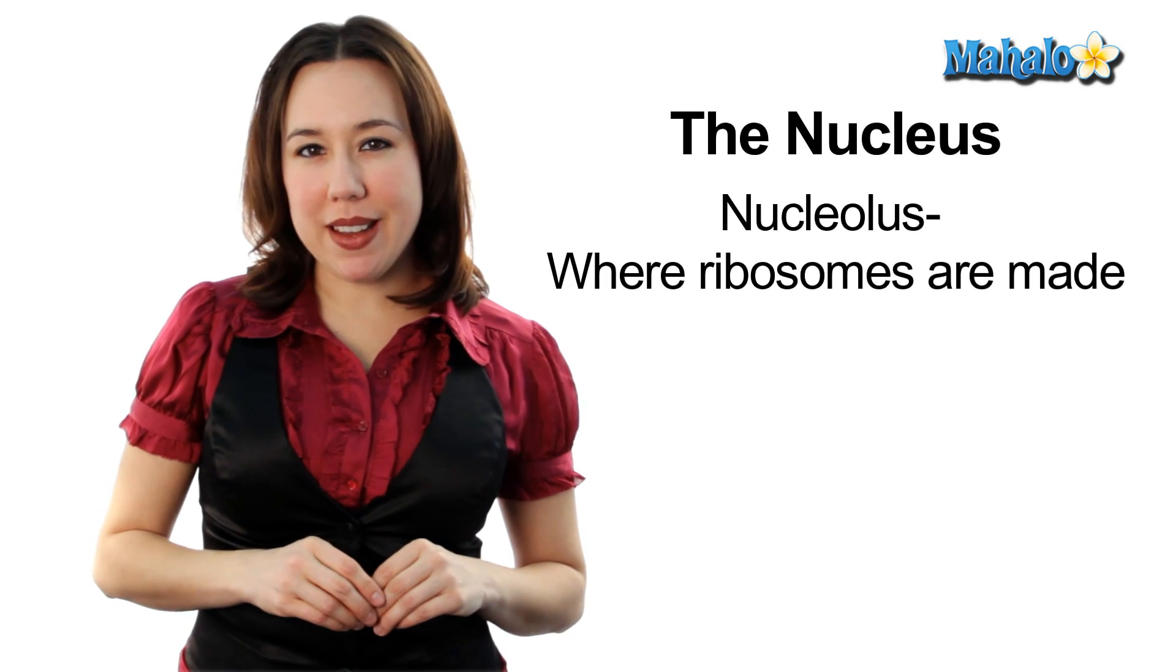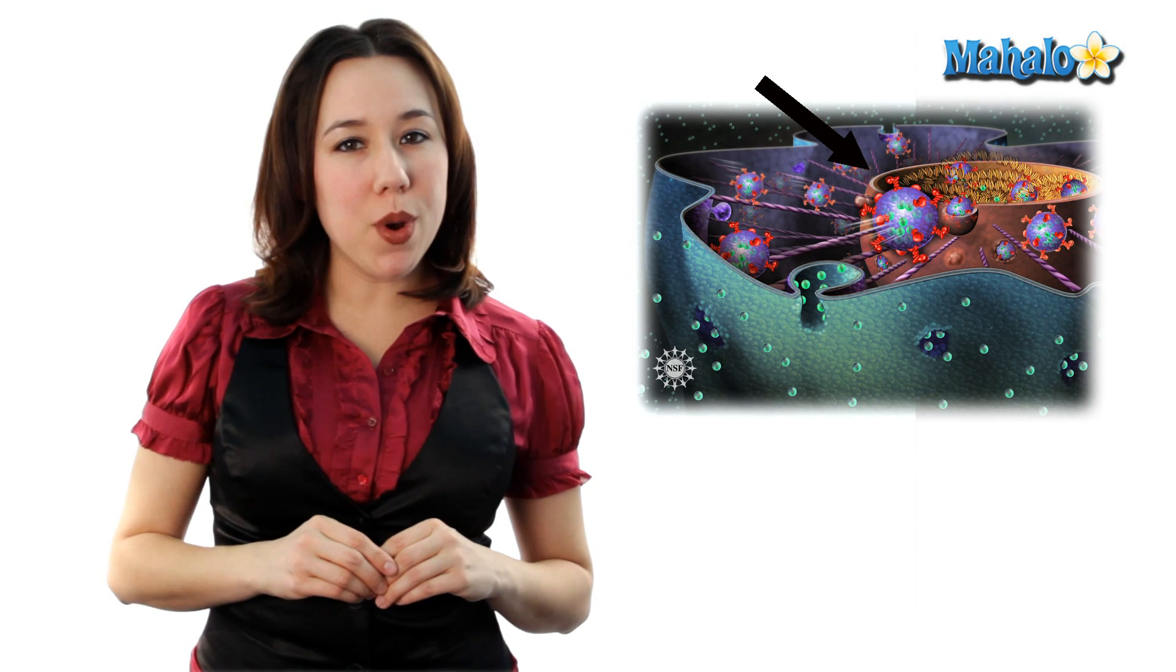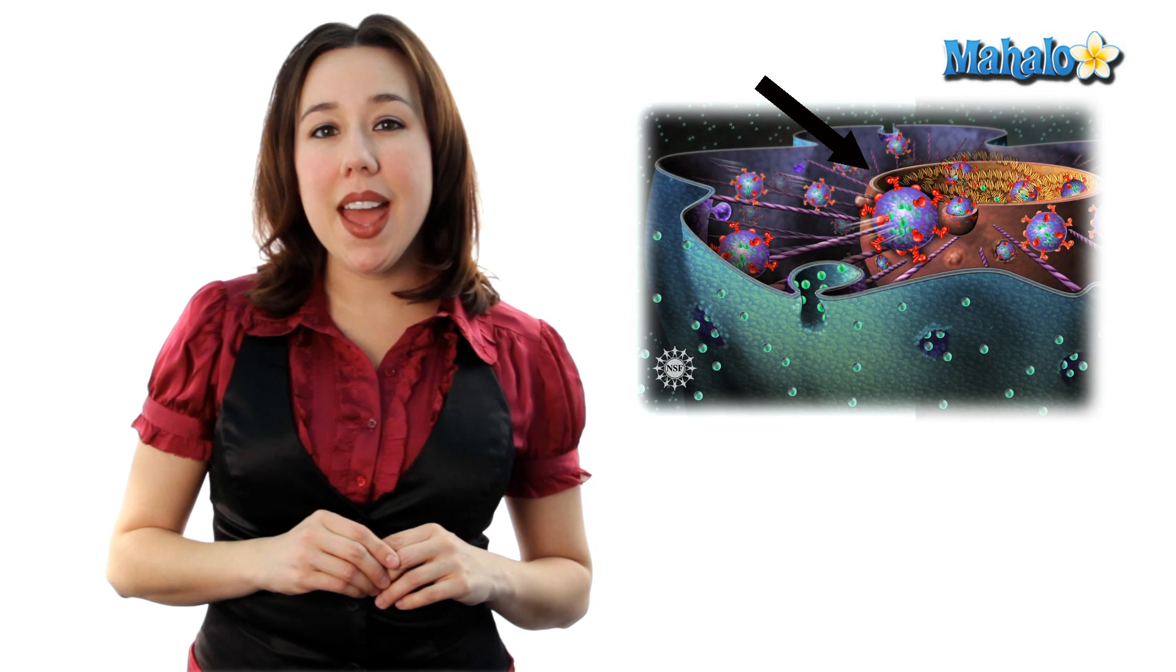As you move outward of the organelle, you're going to see a double outer membrane. This outer membrane will have pores, and these pores allow the movement between the cytoplasm and the nucleus.